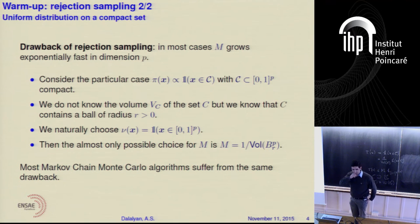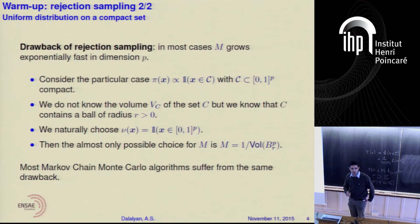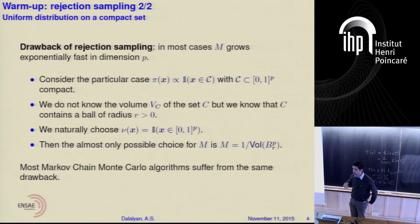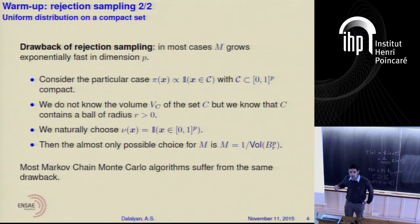As we have seen in the previous talk on conductance, you have to control characteristics such as the conductance or mixing time. And all the known results — at least for these simple Markov chains — imply exponential time in dimension.